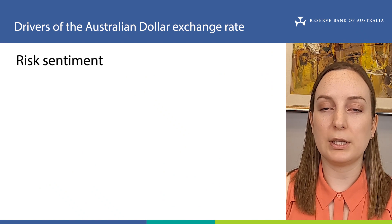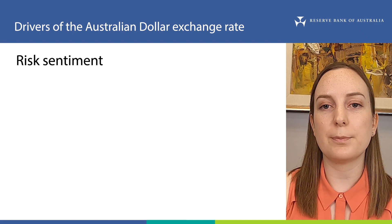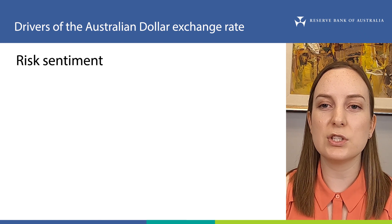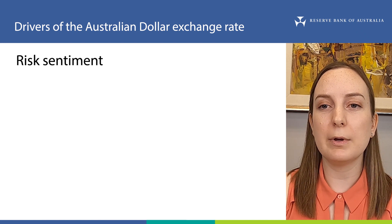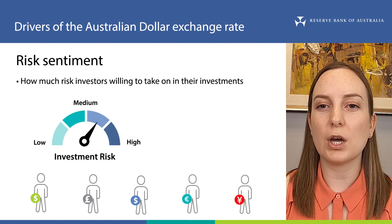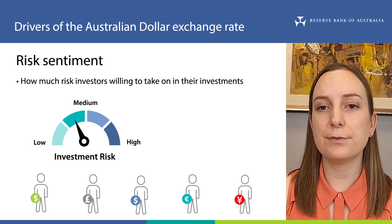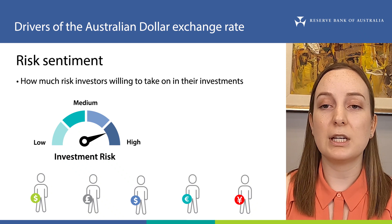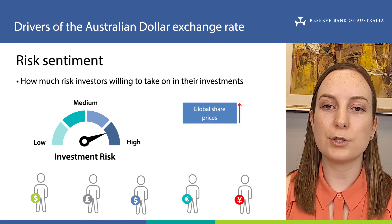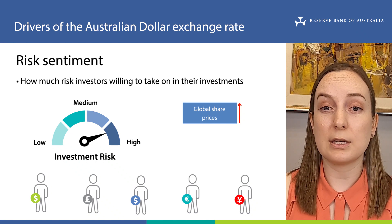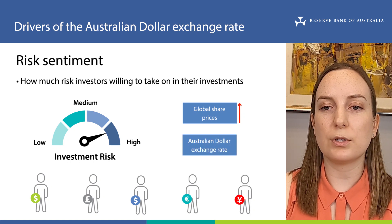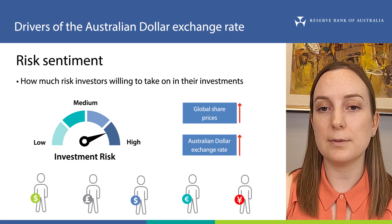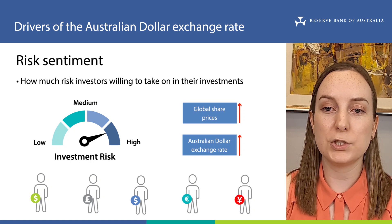So that covers the longer-term drivers of the Australian dollar. The value of the Australian dollar is also influenced by other factors over shorter periods of time, or on a day-to-day basis. For example, the Australian dollar often tracks movements in other financial markets because of changes in what we call risk sentiment. Risk sentiment refers to how much risk investors in financial markets are willing to take on in their investments, and this changes all the time as new information becomes available. If investors feel that economic growth in the future could be higher than they previously thought, they might be prepared to take on more risk in their investments. Prices in a range of financial markets, such as share markets, typically increase as investors respond to positive news about future economic growth or improvements in risk sentiment. We've also observed that the Australian dollar appreciates when risk sentiment improves. This doesn't mean that changes in global share markets cause changes in the exchange rate or vice versa. Rather, it probably means that investors in both markets are responding to a similar thing — changes in risk sentiment.